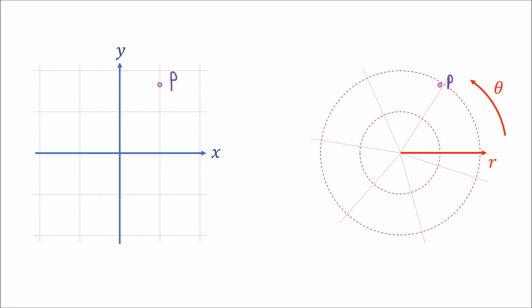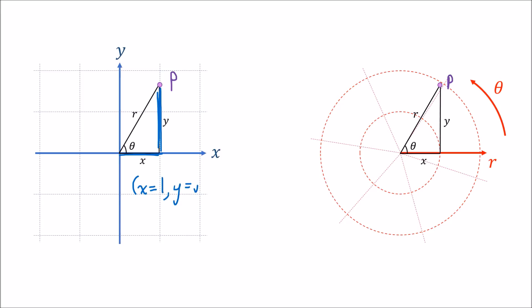To get the xy coordinates we take point P and form a triangle with the origin, and measure the lengths of the horizontal and vertical sides using the coordinate lines. In this case we get x equal to 1 and y equal to the square root of 3. With polar coordinates, we use the same triangle but instead use the length of the hypotenuse to get the radius r, and the angle of counterclockwise rotation theta. So in this case we get a radius of 2 and an angle of pi over 3, or 60 degrees.